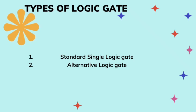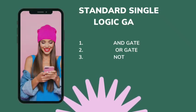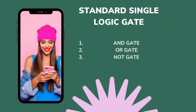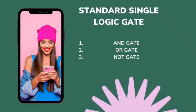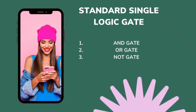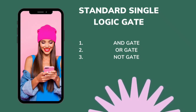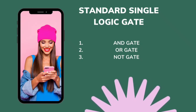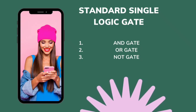Under types of logic gates, we emphasized standard single logic gates and alternative logic gates. For standard single logic gates, we covered the AND gate, the OR gate, and the NOT gate. These are also called the basic logic gates, and we explained them extensively.